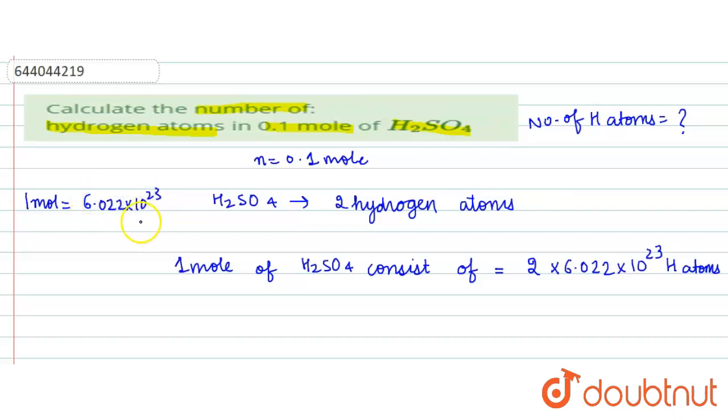Therefore, for one mole of H₂SO₄ consists of 2 × 6.022 × 10²³ hydrogen atoms. Therefore, 0.1 mole of H₂SO₄ equals 0.1 × 2 × 6.022 × 10²³ hydrogen atoms.